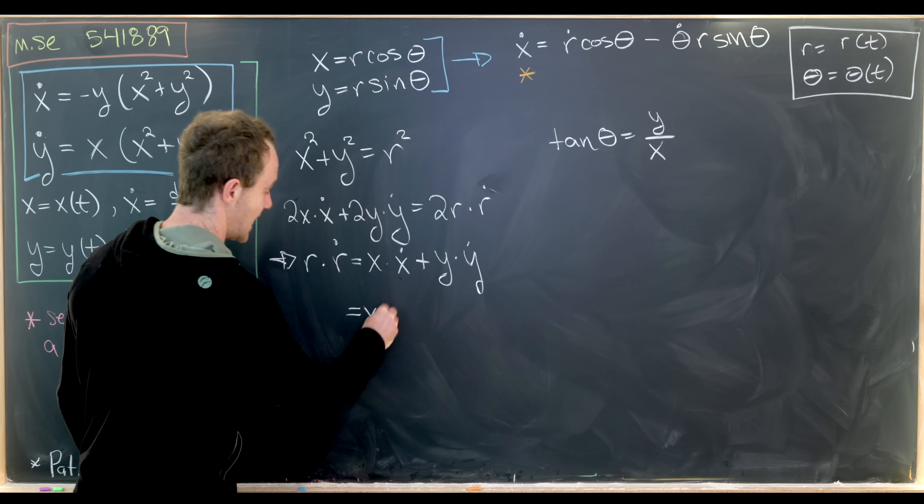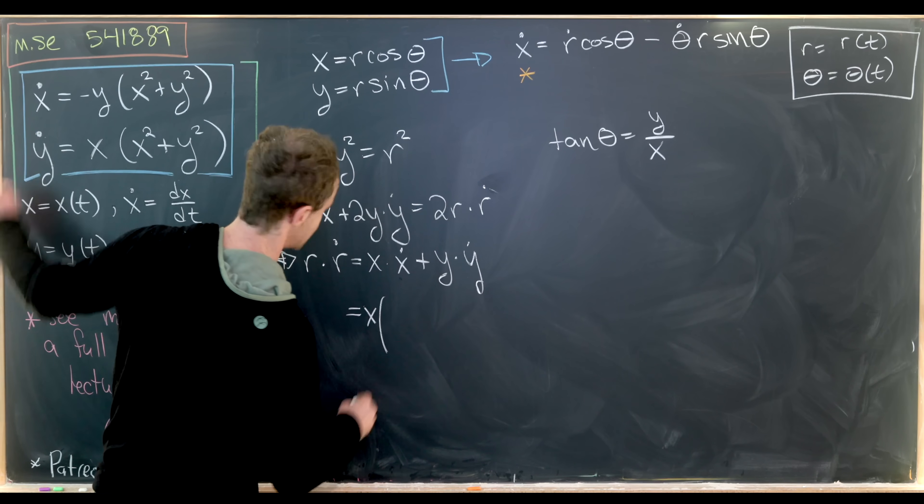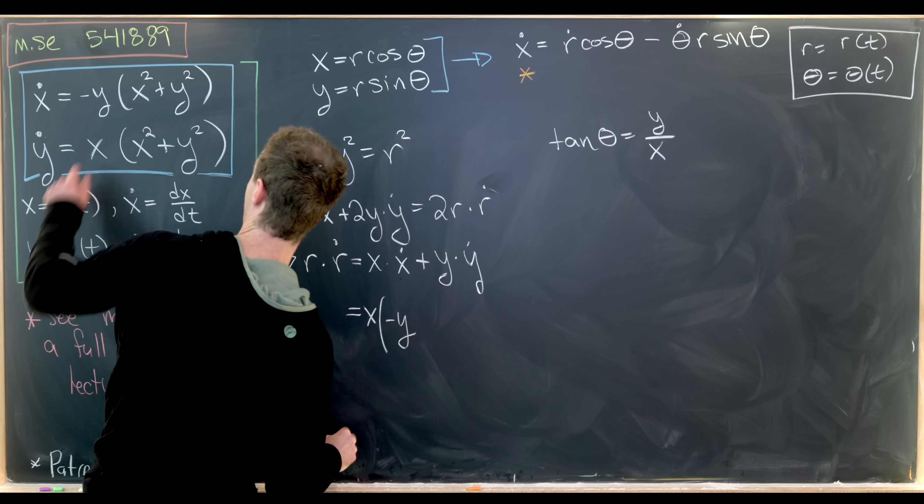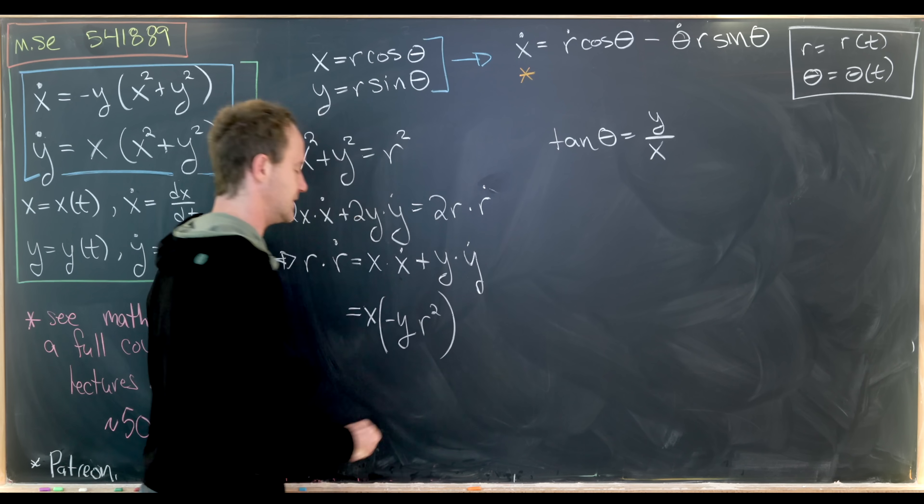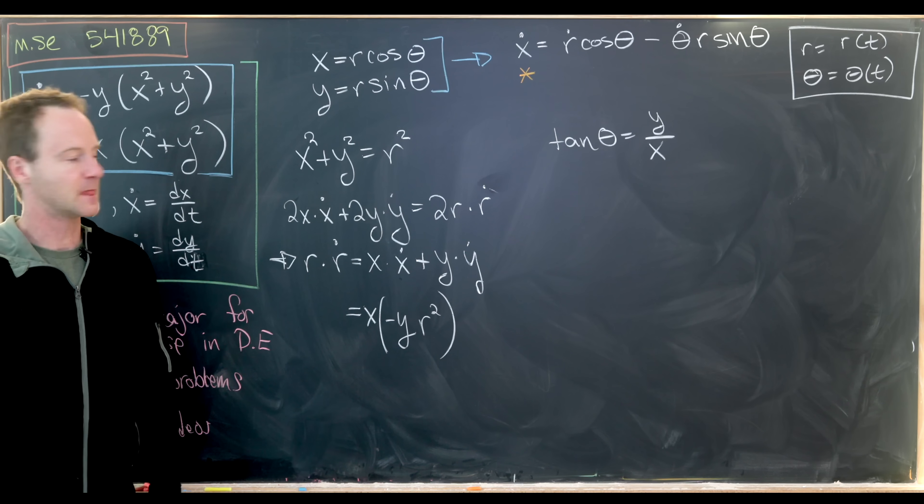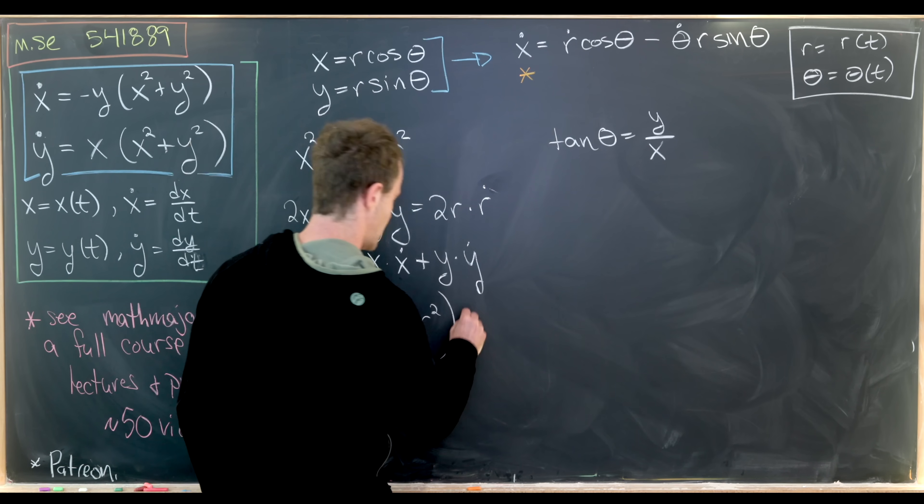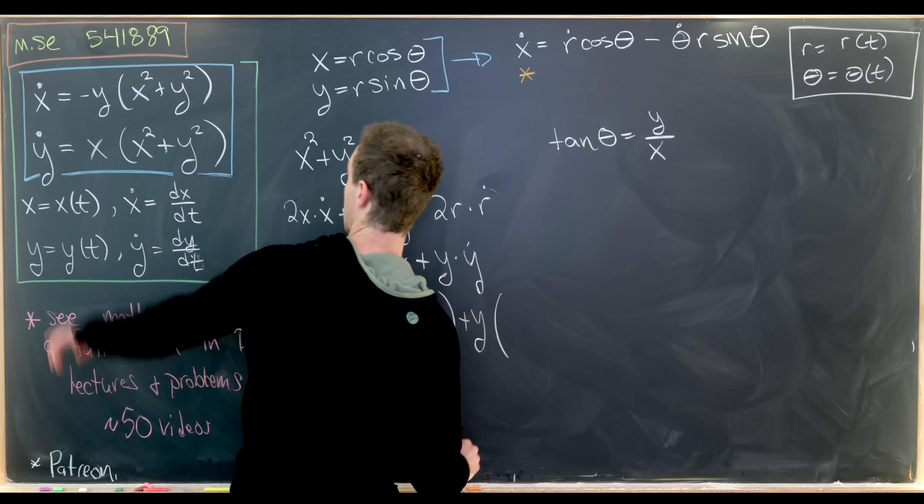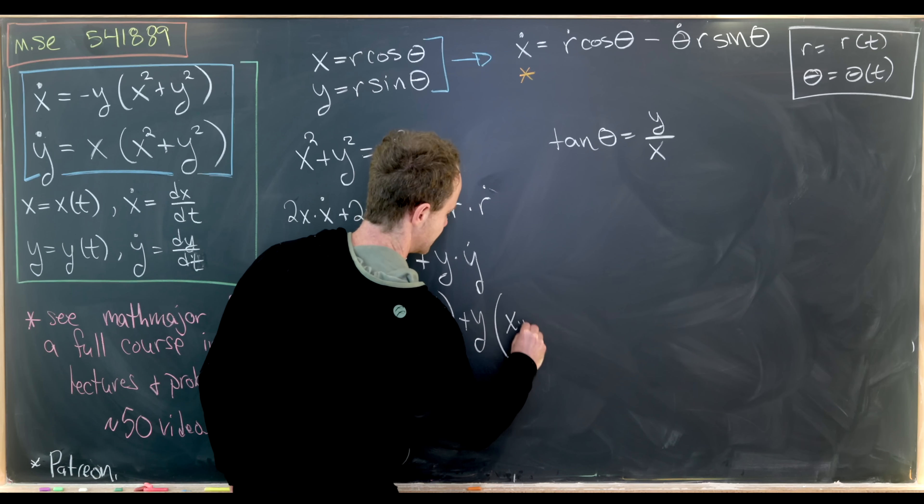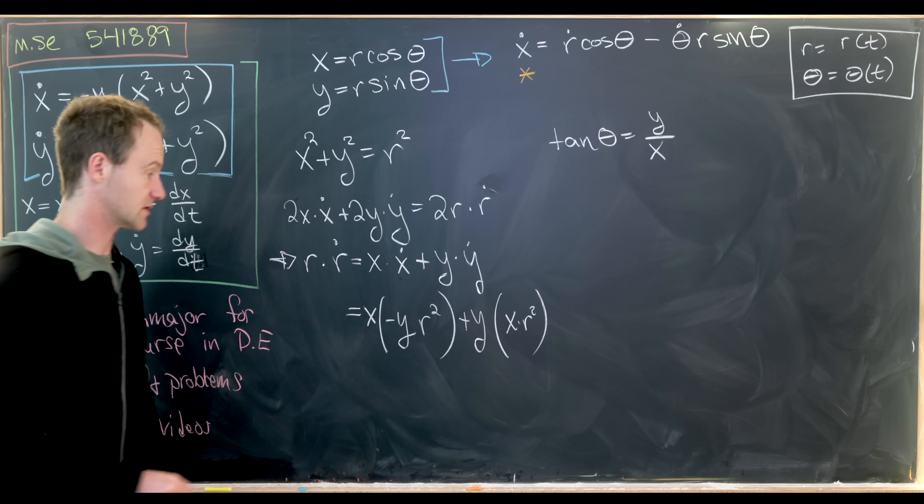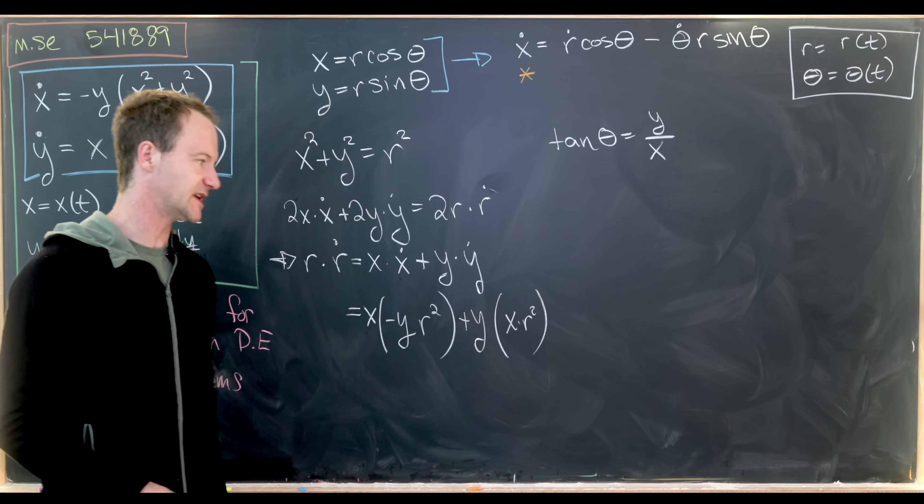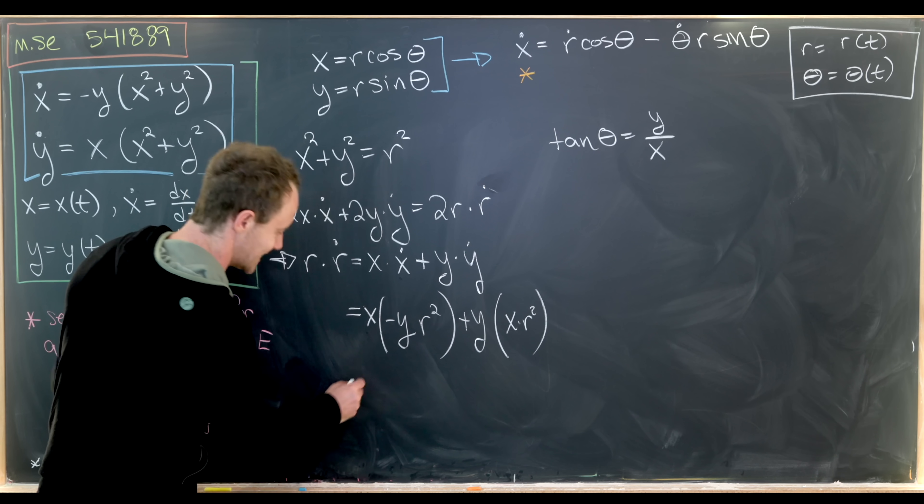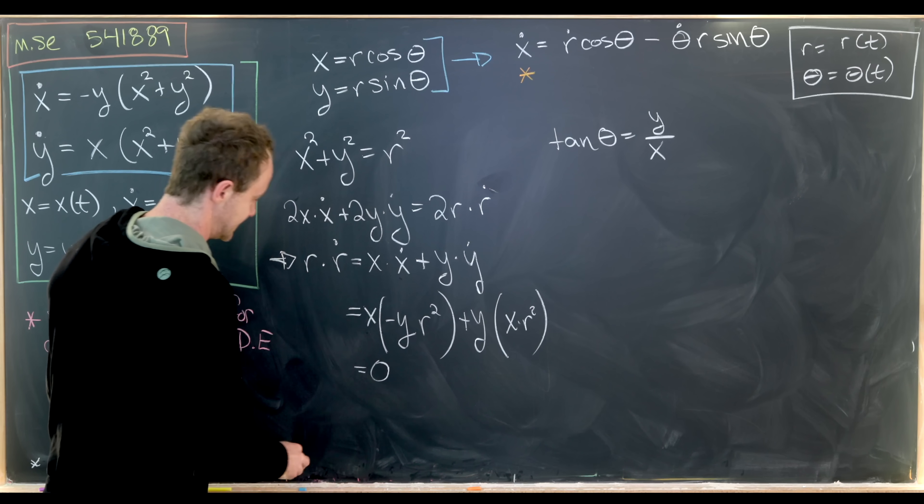So we'll have x times x dot, but x dot is negative y times (x squared plus y squared), but that's negative y times r squared. Then y times y dot will give us y times x times r squared similarly. But look at this. This is negative xy r squared and this is positive xy r squared. So that's going to cancel down to 0.